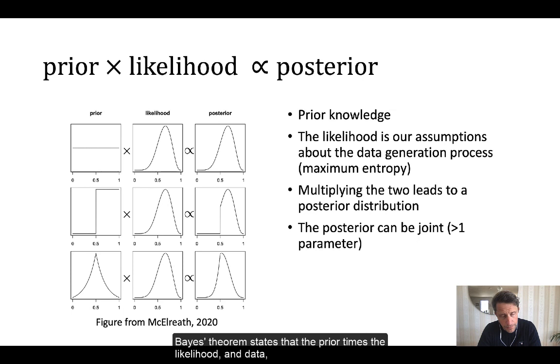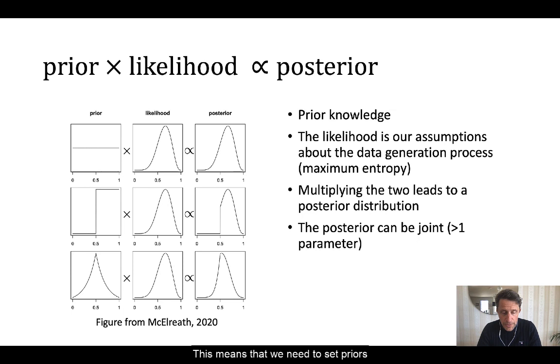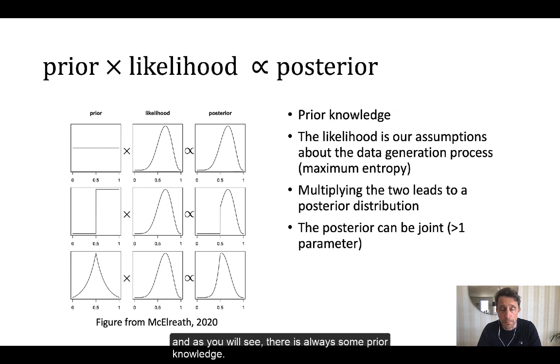Bayes' theorem states that the prior times the likelihood and data is proportional to the posterior. This means that we need to set priors and decide on the likelihood to use. Priors we can set based on prior knowledge, and as you will see, there is always some prior knowledge. The likelihood, on the other hand, we decide based on epistemological and ontological arguments, but more of that later. In short, when we multiply the two, we get a posterior probability distribution.